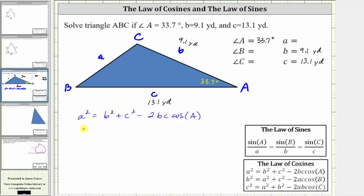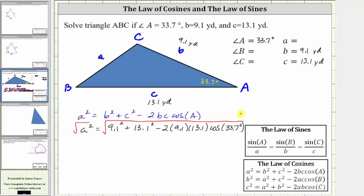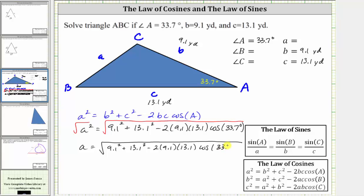Performing substitution, we have A squared equals 9.1 squared plus 13.1 squared minus two times 9.1 times 13.1 times cosine of 33.7 degrees. To solve for A, we take the square root of both sides. Because A is a length and therefore positive, we only take the principal square root, giving us A equals the square root of 9.1 squared plus 13.1 squared minus two times 9.1 times 13.1 times cosine of 33.7 degrees. Now we'll go to the calculator and get our decimal approximation for the length of side A.